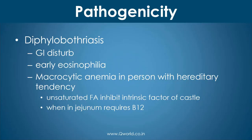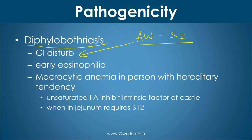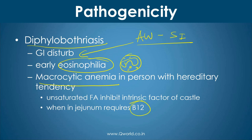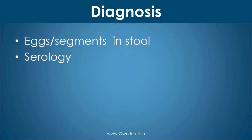The pathogenicity is known as diphyllobothriasis. Since the habitat is the small intestine with the adult worm, it will obviously lead to GI disturbances. Like any parasitic infection, you will see eosinophilia — the blood will show an increased eosinophil count. But the main feature is macrocytic anemia, and that is due to vitamin B12 deficiency. The worm requires B12 while it is in the small intestine of the human being. Additionally, it releases some unsaturated fatty acids that inhibit intrinsic factor, which inhibits B12 absorption. These two factors cause megaloblastic or macrocytic anemia in humans.